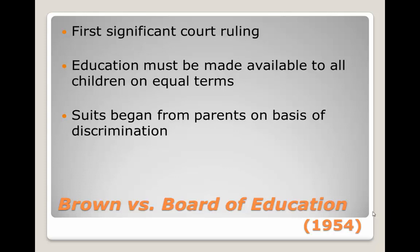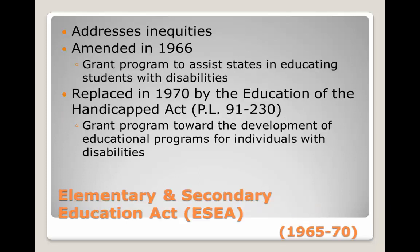Parents argued that the schools were discriminating against the children because of their conditions. In 1965, Congress enacted the Elementary and Secondary Education Act, commonly known as ESEA. This act was passed to address the inequities of educational opportunities for underprivileged children.